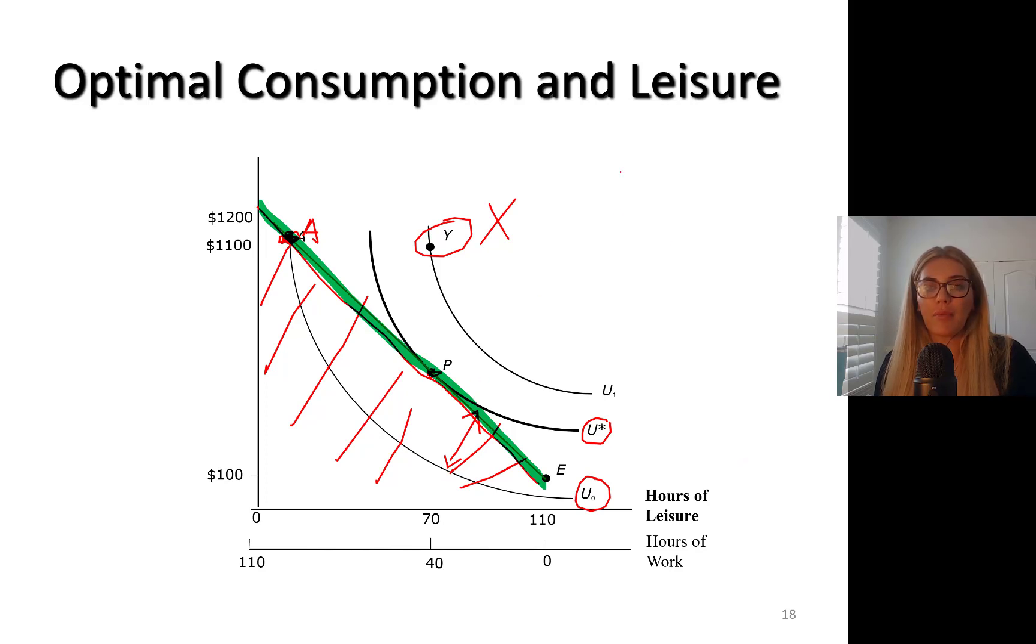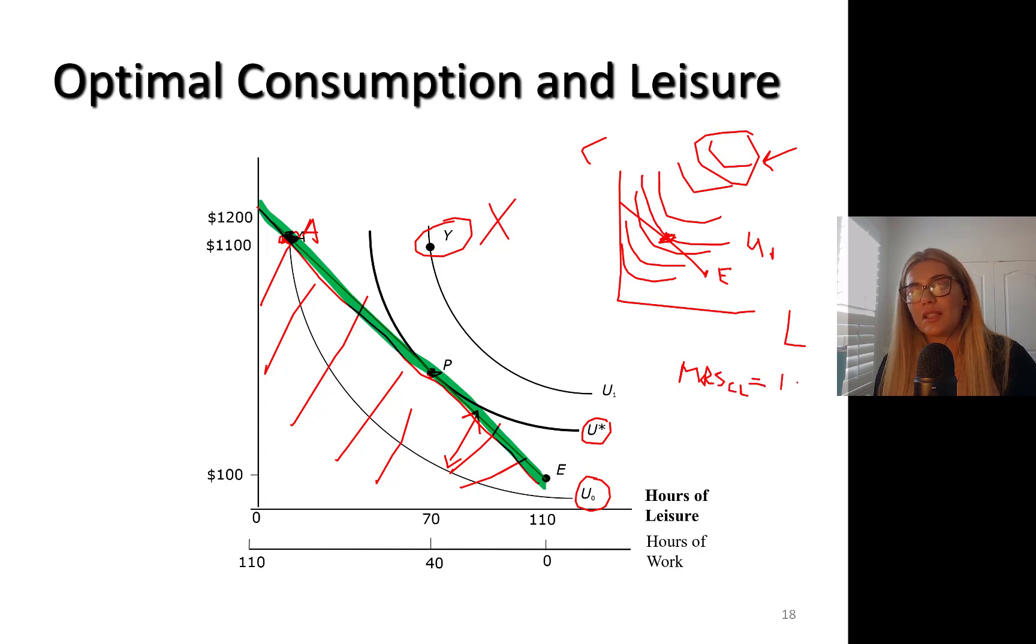The optimal point happens where your budget line is tangent to your indifference curve. There's infinite number of indifference curves here. Higher is better - I want this one, but you can't really go there. Your budget line will determine what's the maximum happiness utility you can achieve. I'm going to pick a point where they are tangent to each other, so marginal rate of substitution between consumption and leisure, which shows the trade-off between them, needs to be equal to the wage rate.